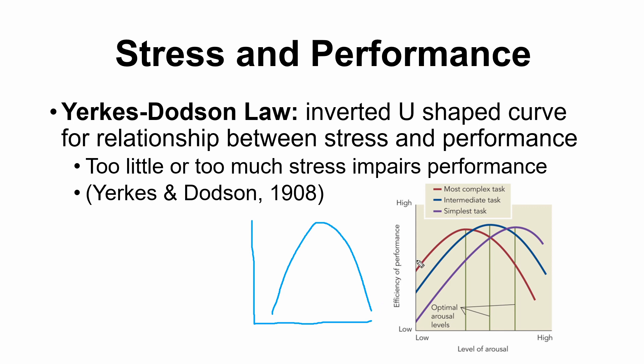The three different lines in the diagram show that for more complex tasks, a lower level of arousal is the more optimal state. If you're doing very simple tasks, you can tolerate doing them under high levels of stress. But the more complex the task, the less stress you'd rather be under if you want to perform optimally. That's just an extension of the Yerkes-Dodson law.